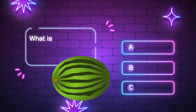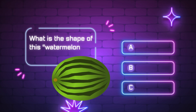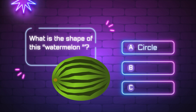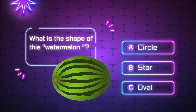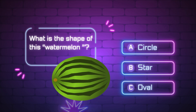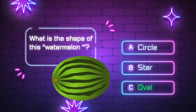What is the shape of this watermelon? A, circle. B, star. C, oval. Yes, it is oval.